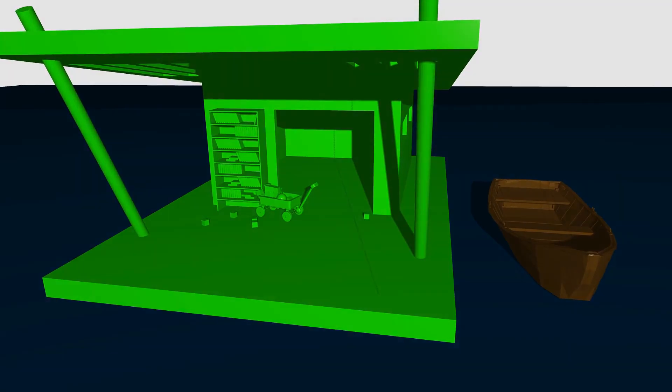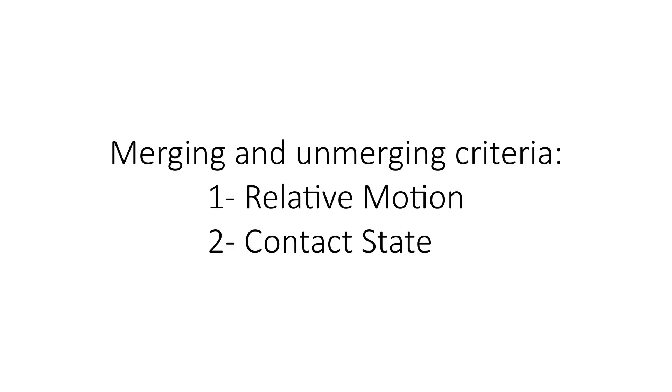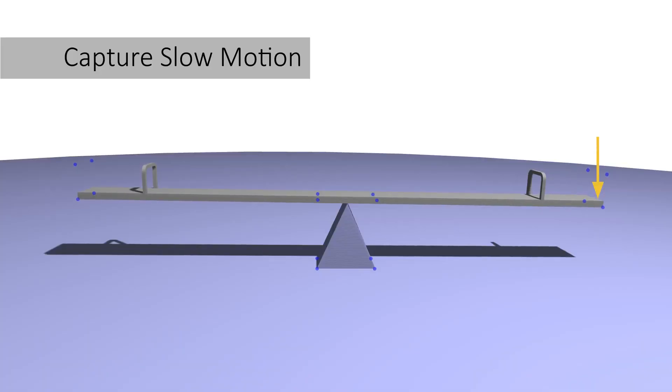We call these merged bodies collections. We merge and unmerge based on a relative motion metric and the state of contacts. We bound the fastest point of relative motion using oriented bounding boxes and merge if it is below a threshold. This avoids unwanted merging when a long object has slow yet important motion.